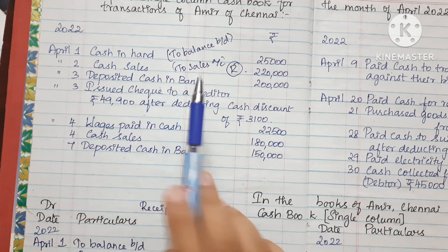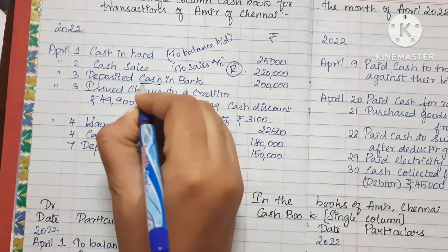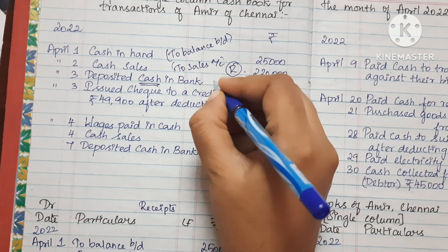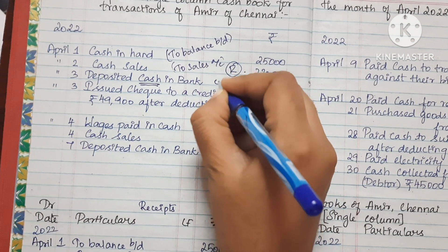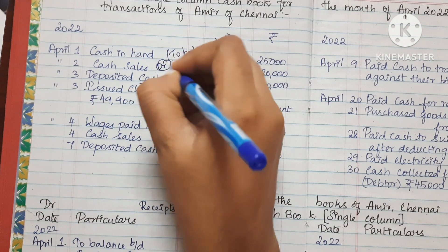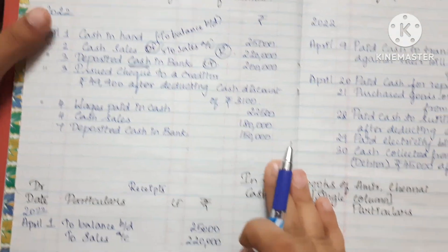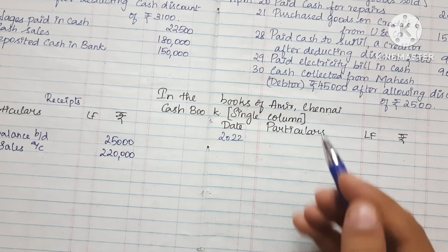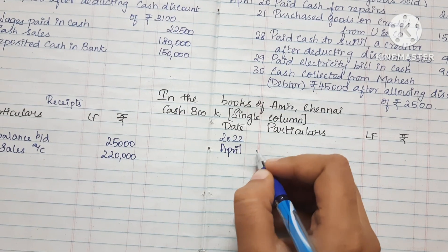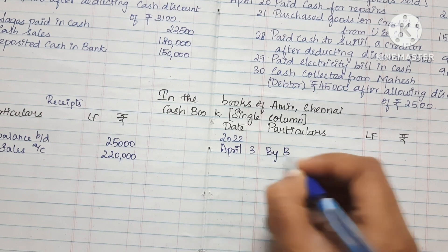The next transaction is deposited cash in bank. When we deposit cash into the bank, it is a credit entry on the cash side. The entry is: By Bank Account. The date is the 3rd.